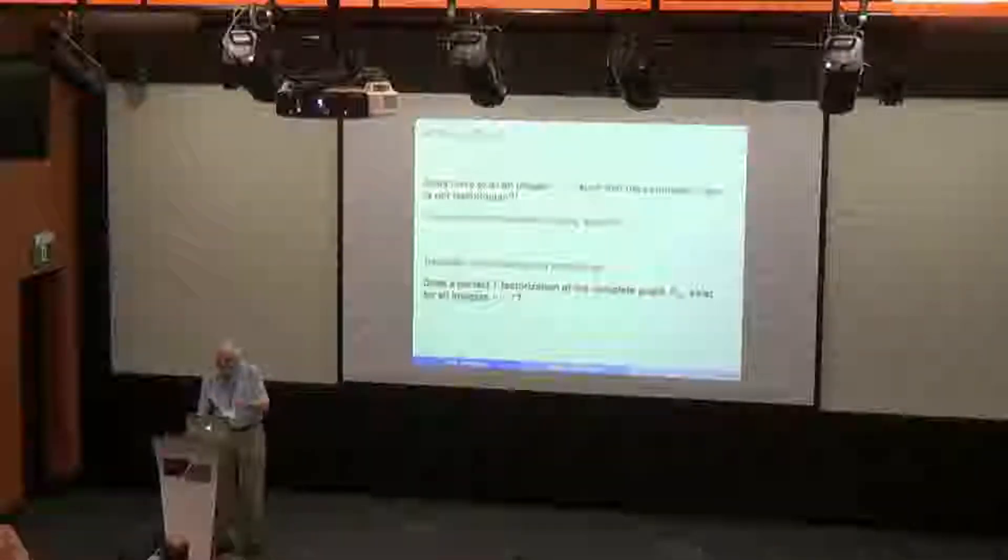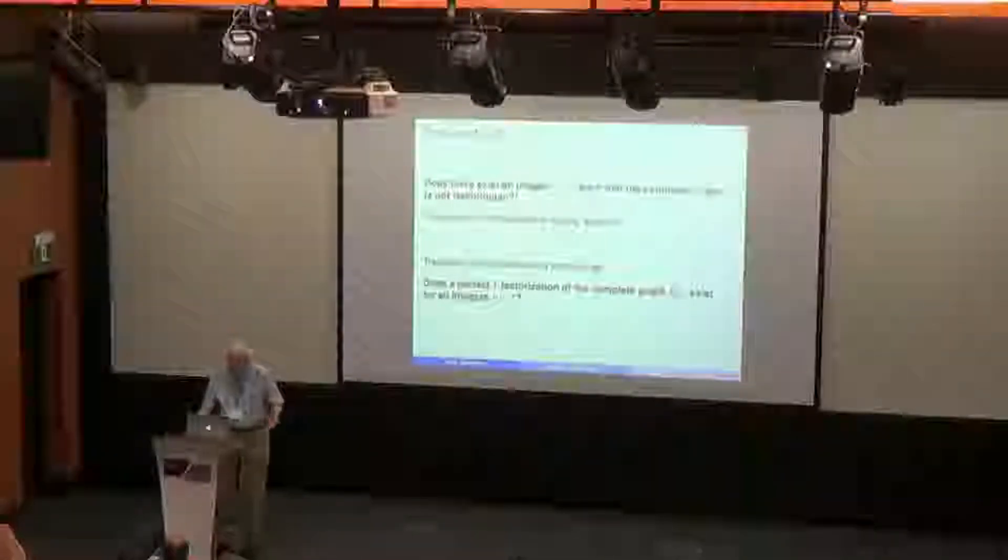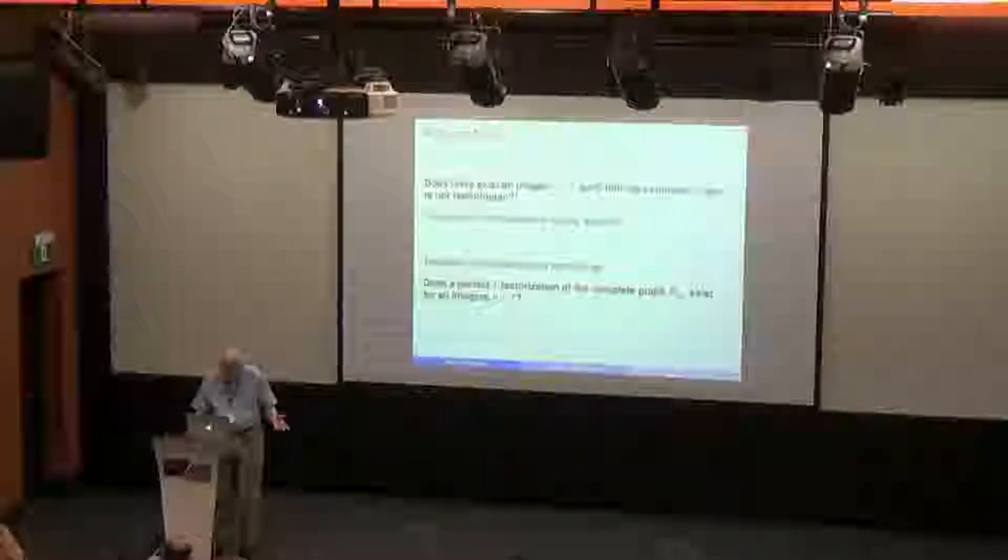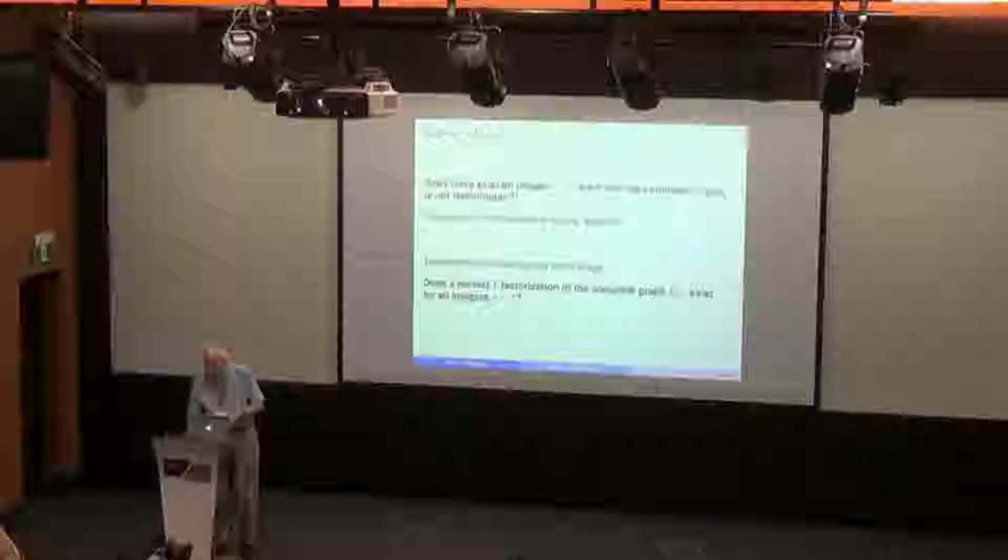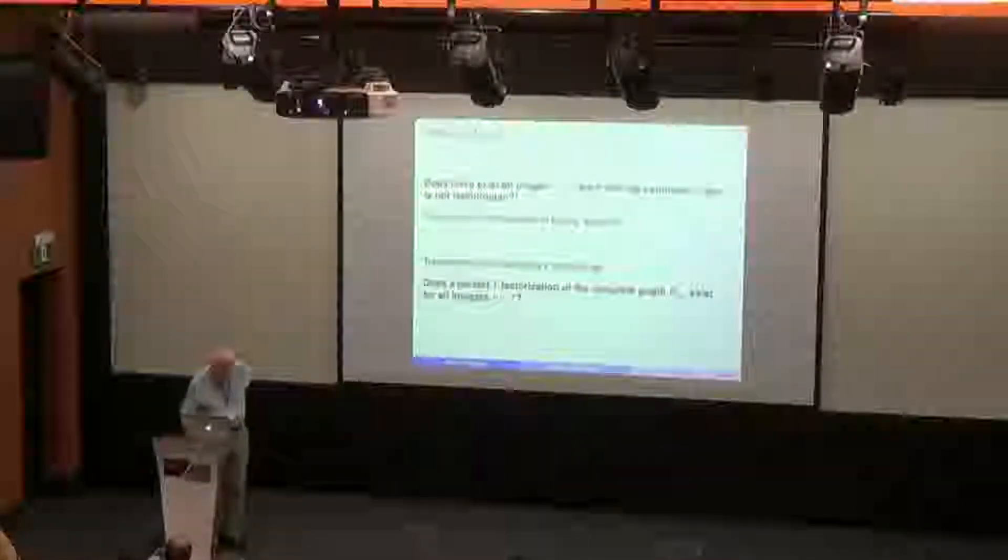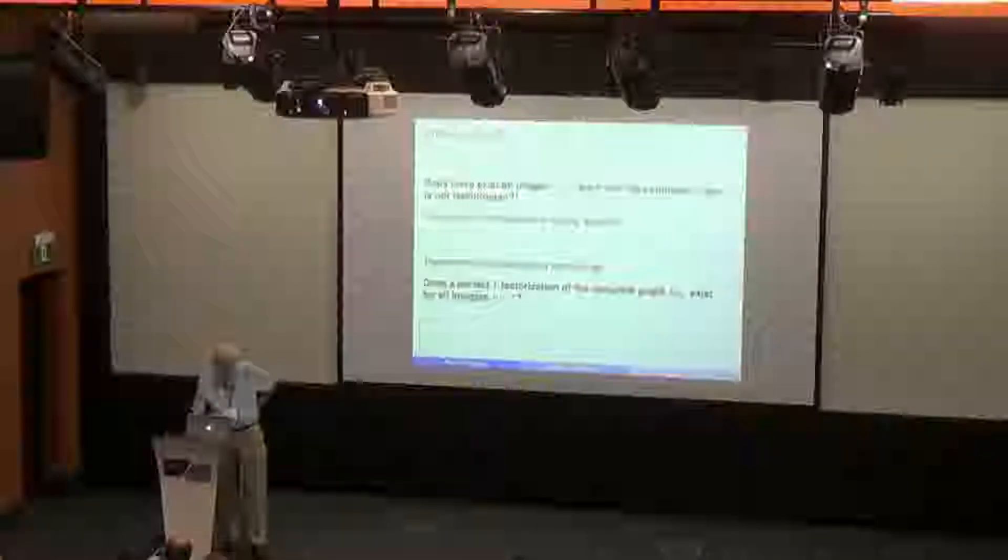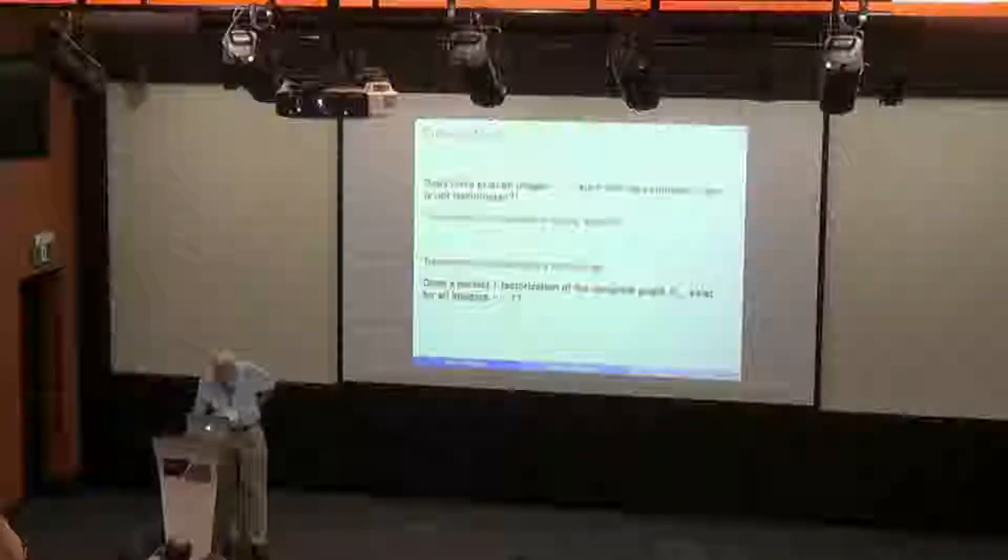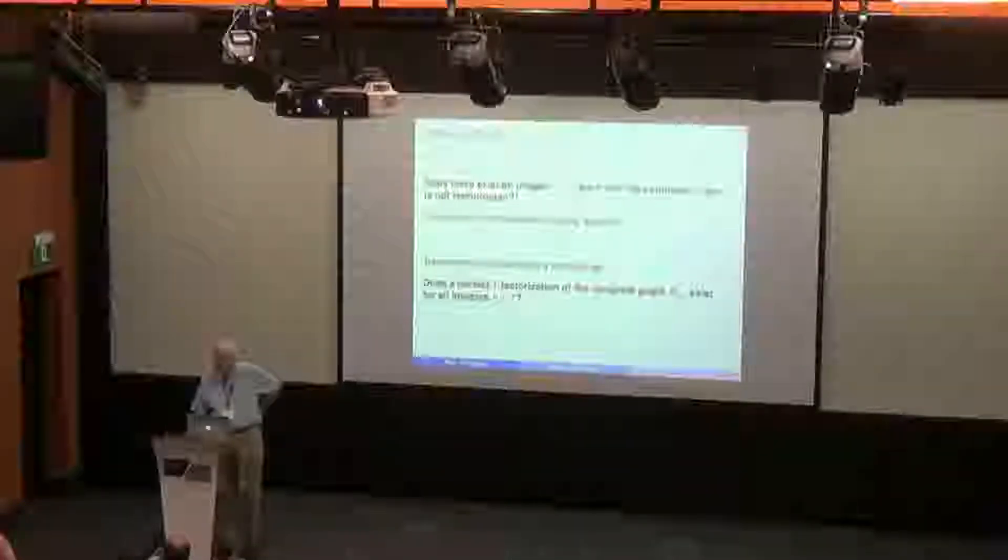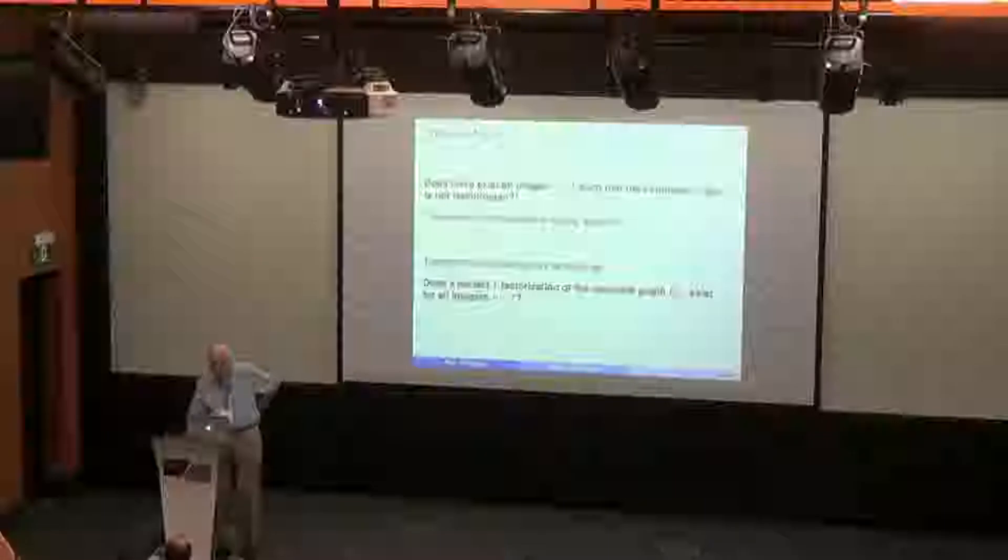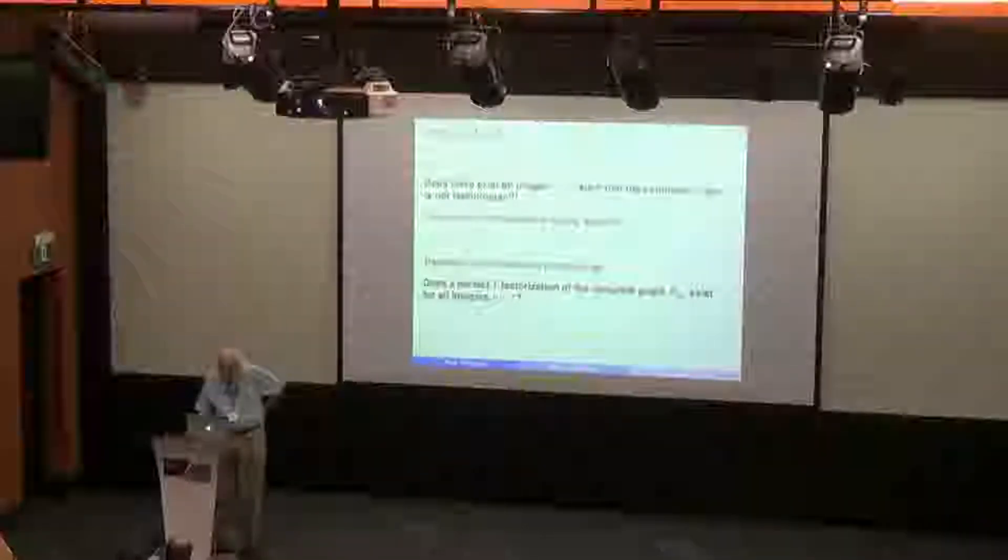One-factorization is a partition of edges of the complete graph into these one-factors. Simple. Union of two one-factors is a two-factor, which is either connected or not, but again, very simple. What we call graphs which have a perfect one-factorization. I didn't say what a perfect one-factorization is. So if you have a one-factorization, you look at union of two one-factors, and if any such union for any two one-factors is connected, is a Hamiltonian cycle, then the one-factorization is perfect. Again, very simple notion.